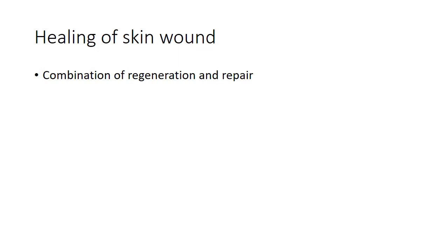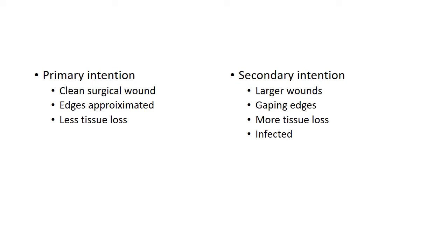Healing of skin wounds is a classic example of healing as a combination of regeneration and repair — we discussed what regeneration and repair are in our last video. Healing of skin wounds is accomplished in one of the following two ways: healing by first intention or primary union, and healing by second intention or secondary union. This depends upon certain conditions.